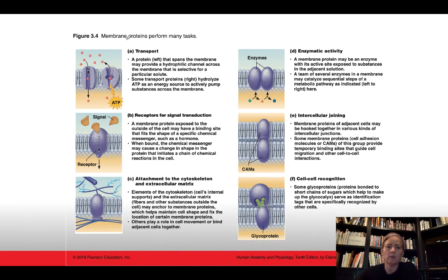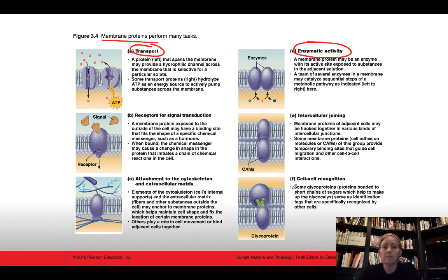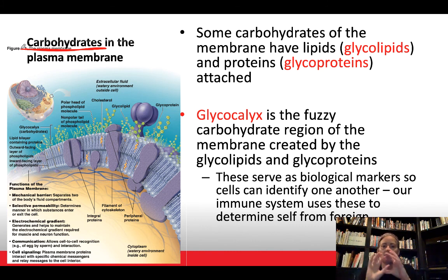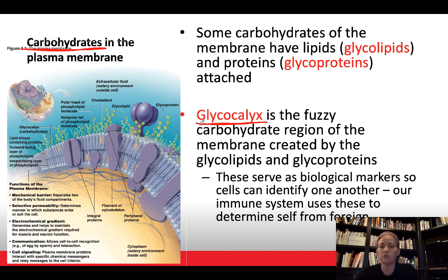The textbook discusses membrane protein transport functions and peripheral proteins acting as enzymes, among other tasks that membrane proteins perform. Another interesting structure related to the plasma membrane is the glycocalyx — carbohydrate groups attached to the outside of the plasma membrane, creating what is essentially a sugar coating around the cell.